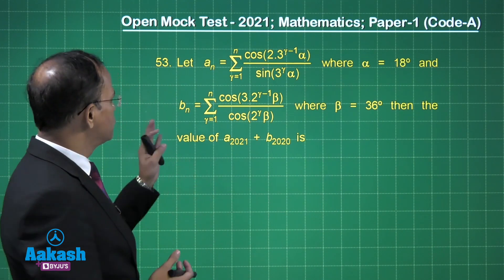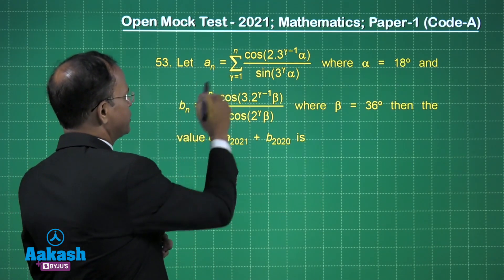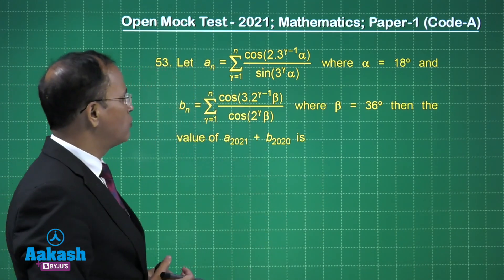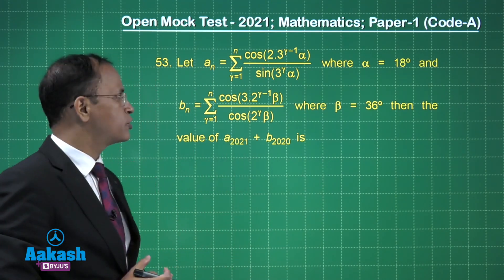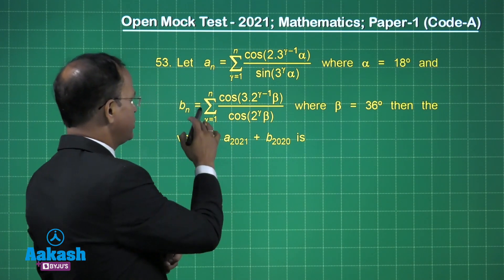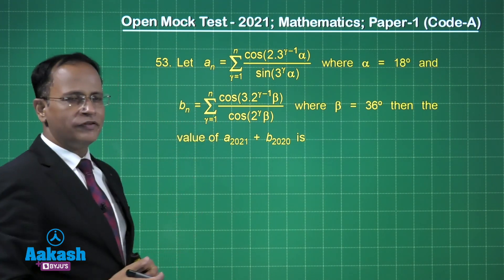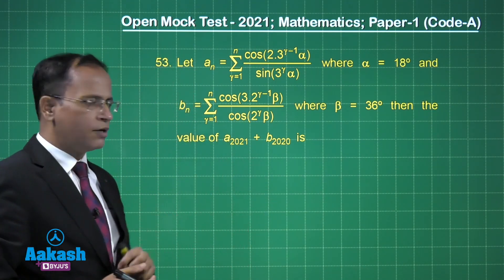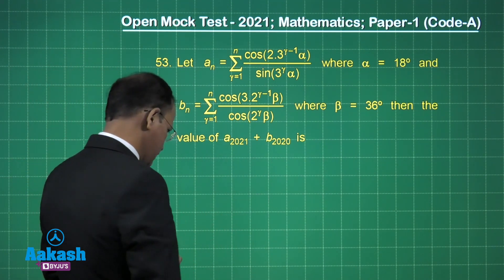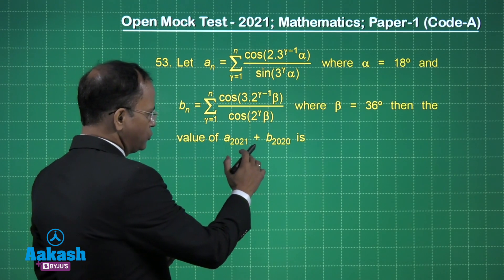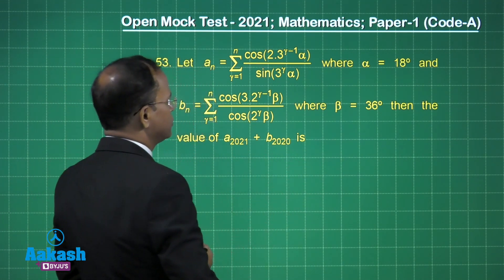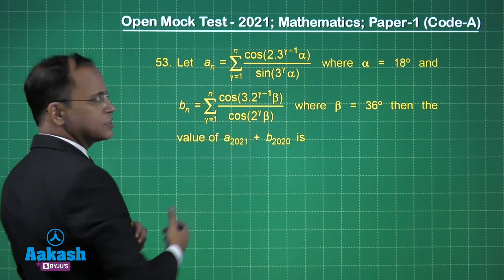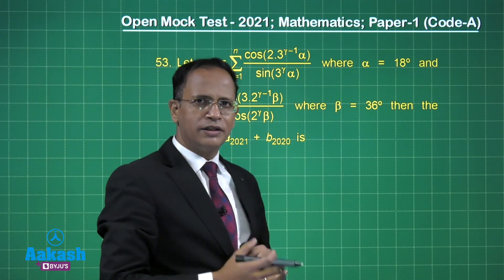Now let us talk about the next problem. We have aₙ = Σ (γ=1 to n) cos(2·3^(γ−1)·α) / sin(3^γ·α), where α = 18°. And bₙ = Σ (γ=1 to n) cos(3·2^(γ−1)·β) / cos(2^γ·β), where β = 36°. We need to find a₂₀₂₁ + b₂₀₂₀. If we just substitute values directly it would be tiresome, so we need a technique.